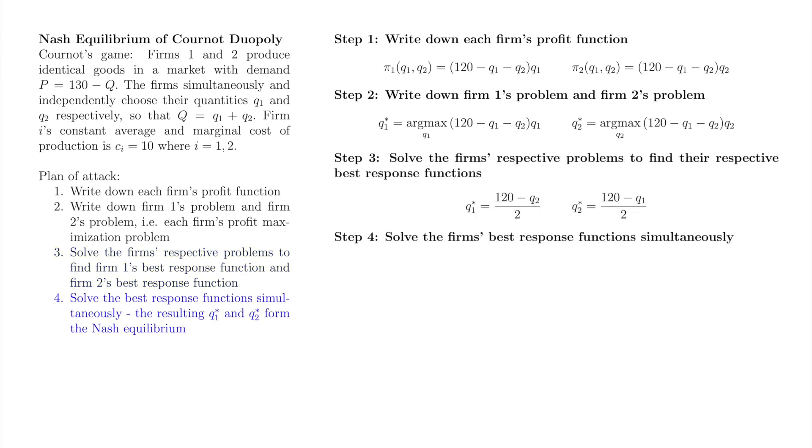Now that we've found both firms' best response functions, the logical equivalent of underlining all of the best responses, we find the Nash equilibrium by solving the best response functions simultaneously, the logical equivalent of seeing which square or squares have both payoffs underlined. We change q1 and q2 to q1 star and q2 star, since Nash equilibrium occurs when both firms maximize their respective profits simultaneously.